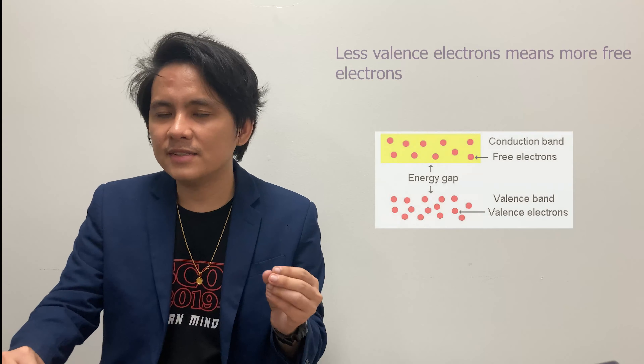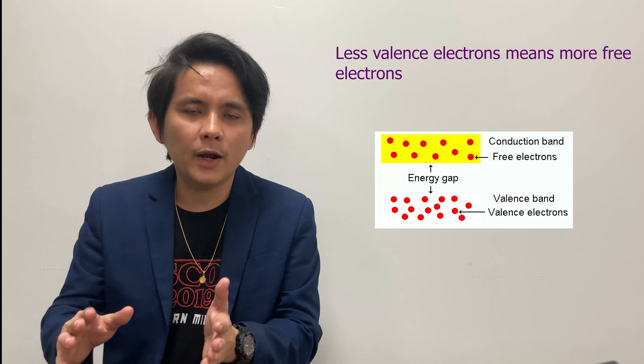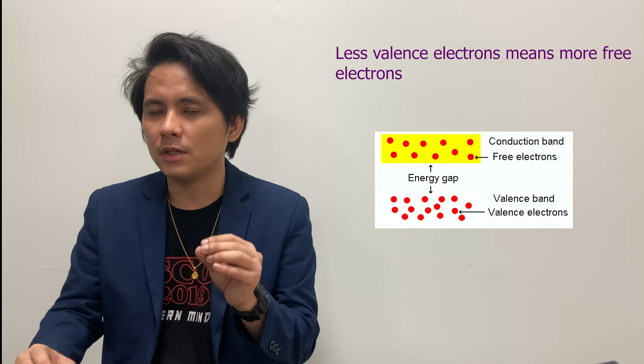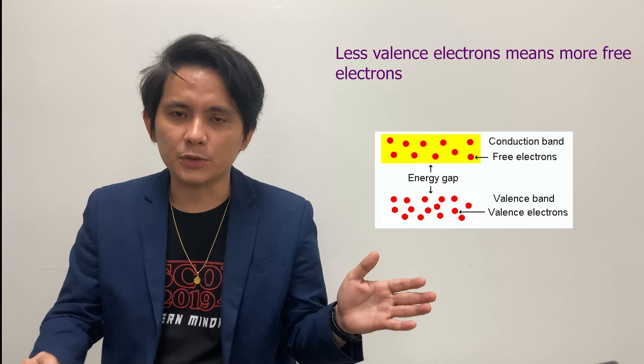So how can we consider a material with less than four valence electrons a good conductor? It is in the sense that when we have fewer valence electrons, that means we have more free electrons that jump out from the valence band to the conduction band.